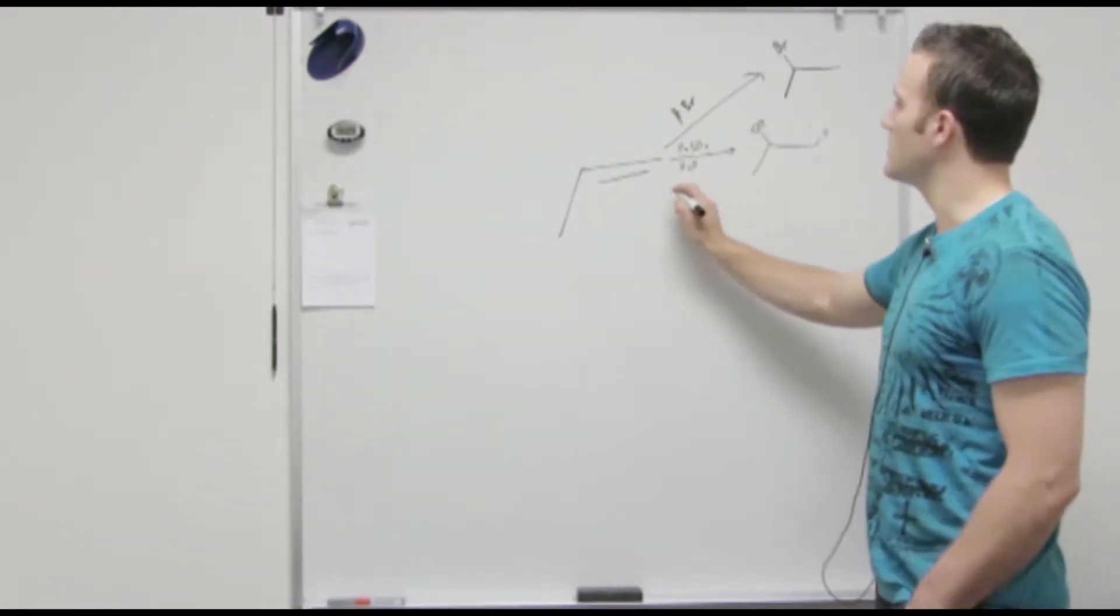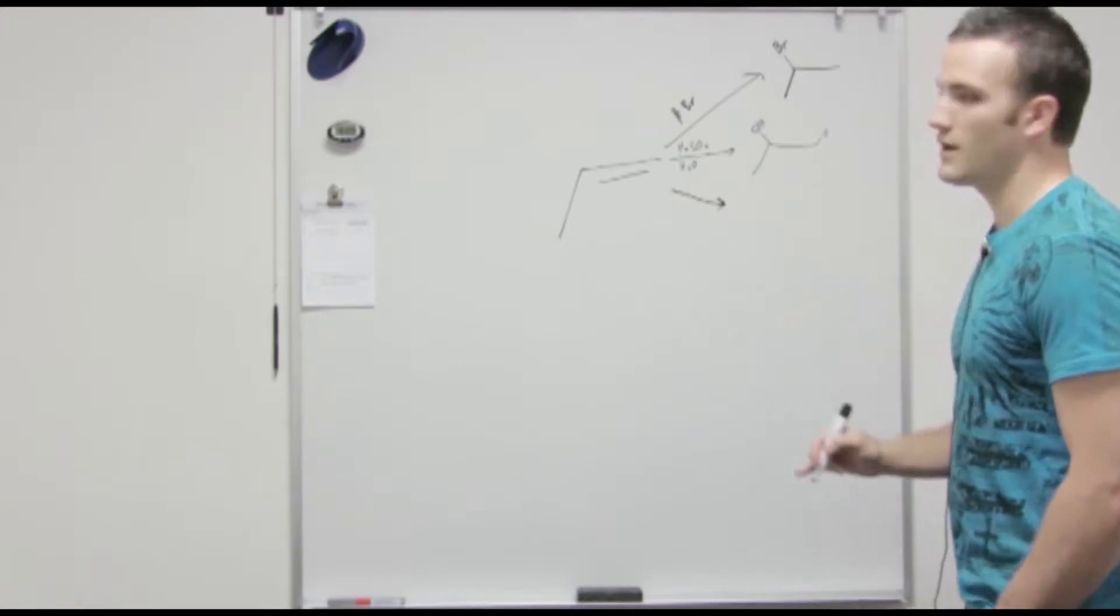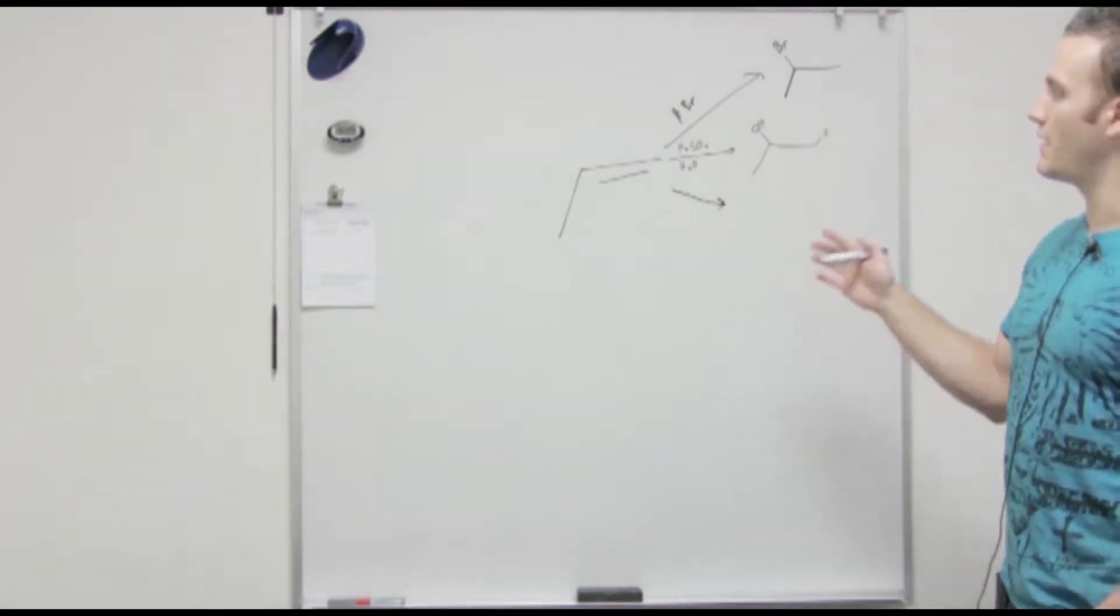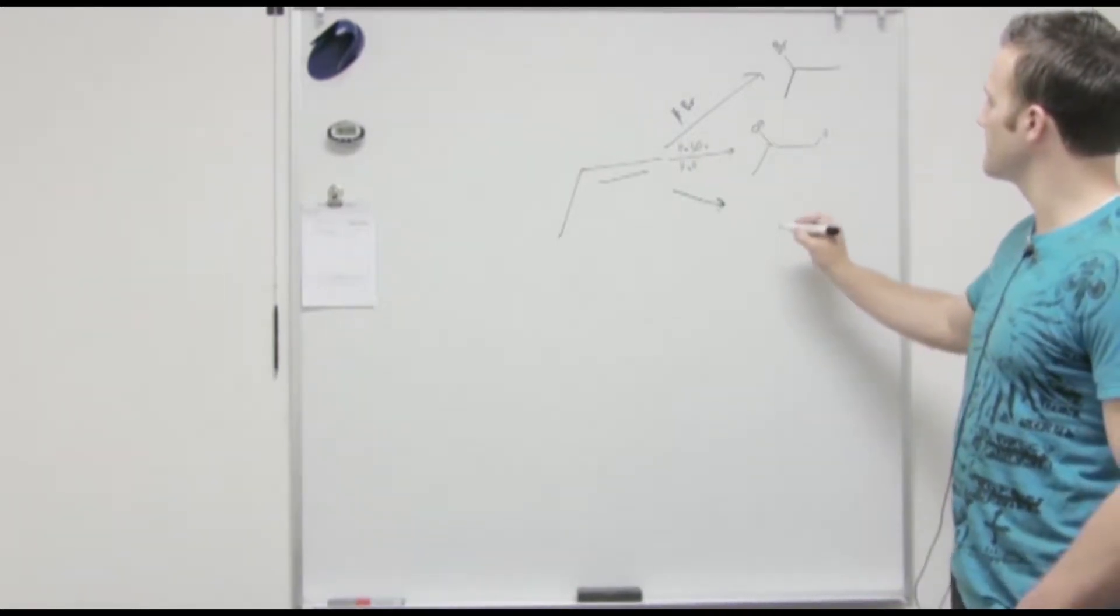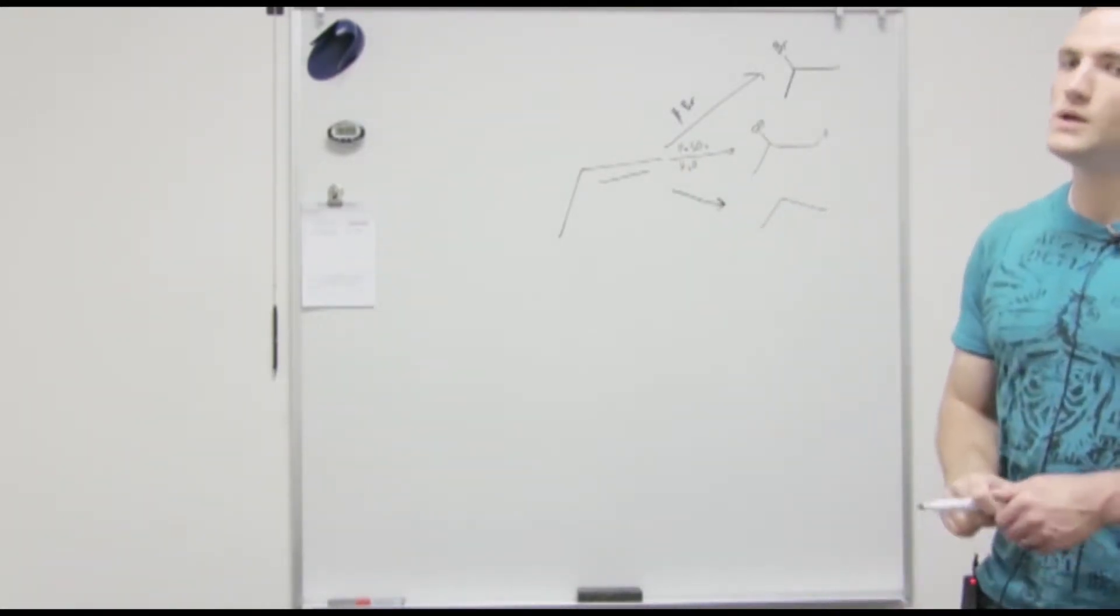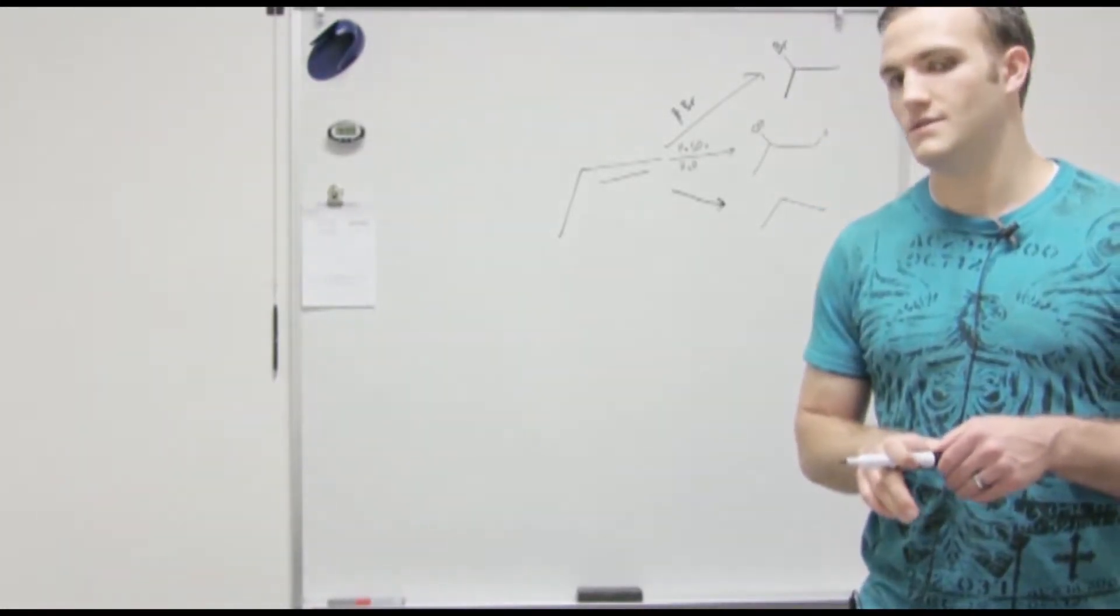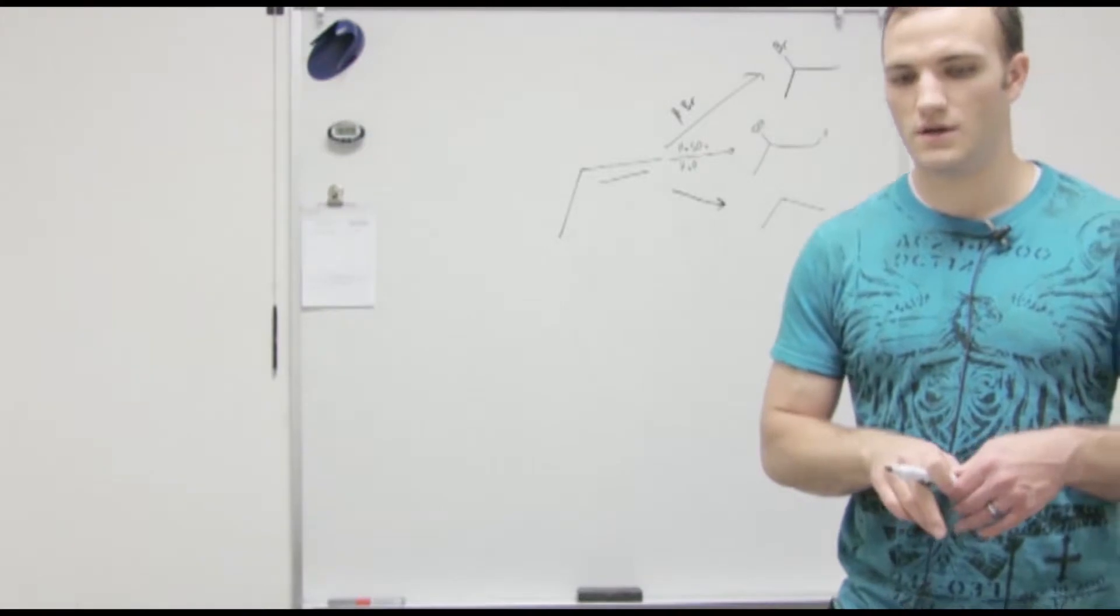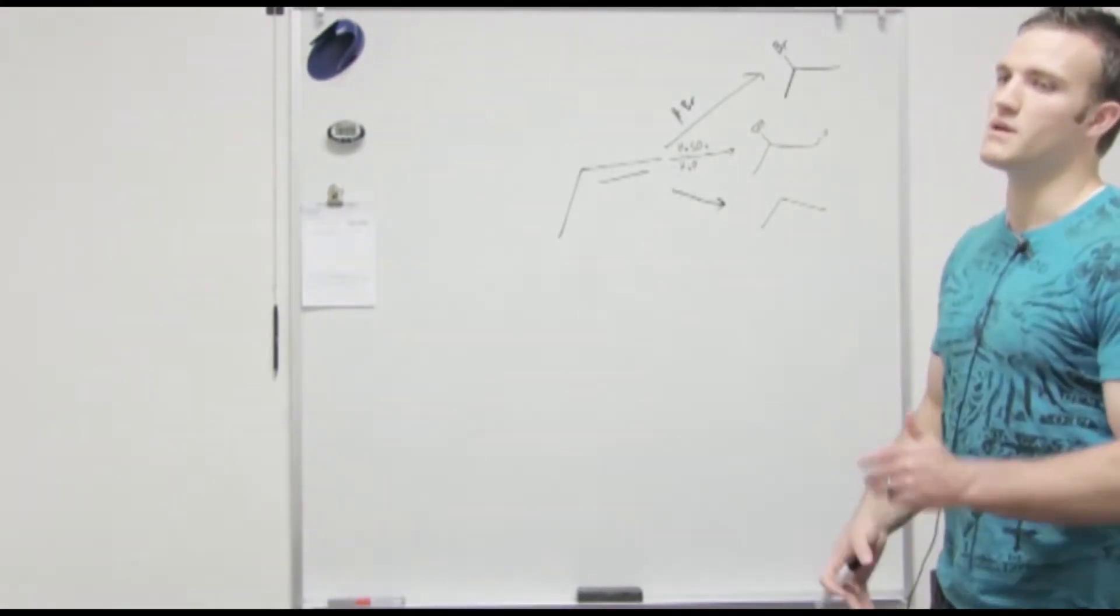While we're talking about alcohols, how would you get, because that follows Markovnikov's rule, right? Yeah. How would you get an alcohol on anti-Markovnikov's rule? Is that the halohydrin? Not quite. It's the hydroboration-oxidation. So it's like a two-step thing.